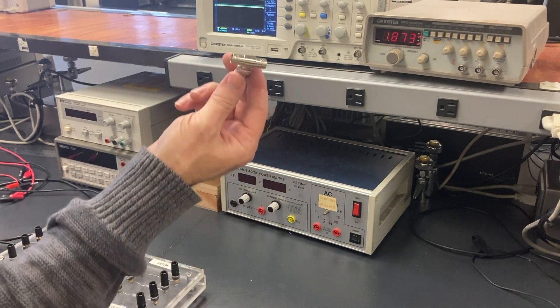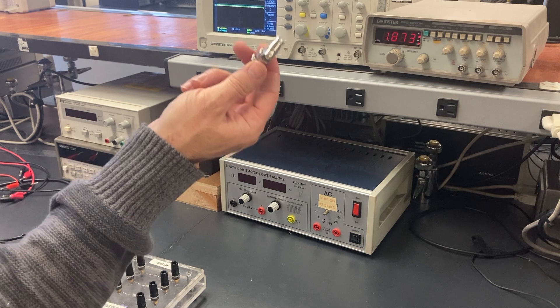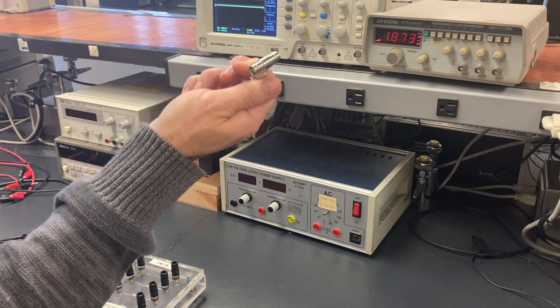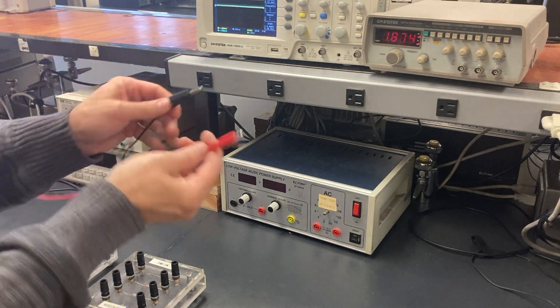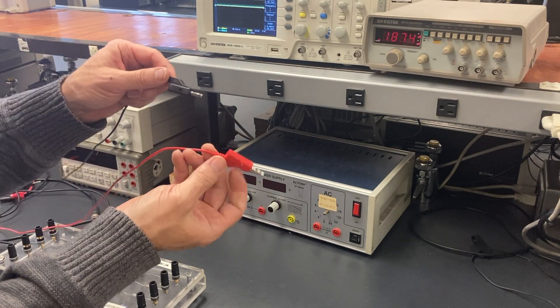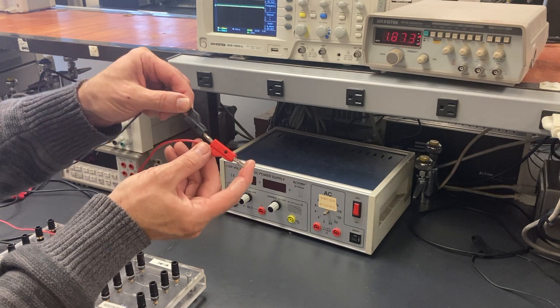And finally, when we need to split a signal, if it's coming from an instrument we can use these BNC T-connectors, or if it's in our circuit we can just connect two banana plugs together.